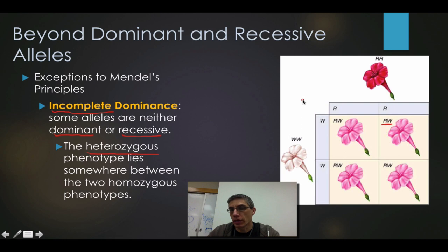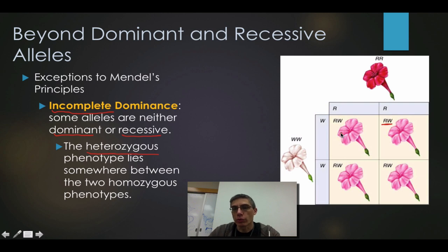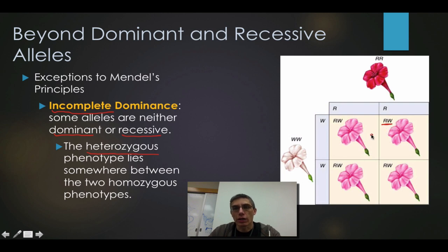Something interesting about this Punnett square is that we are used to capital and lowercase letters. When you talk about incomplete dominance and co-dominance, we use different letters. For the red, we're using capital R, and for the white, we're using capital W. For the heterozygous, we combine these two letters — one R, one W. The big thing for incomplete dominance is that we have an intermediate phenotype, different from the parents we started with.